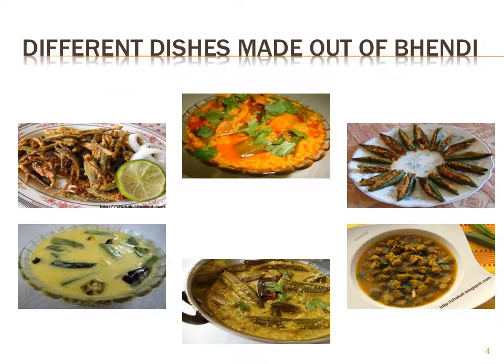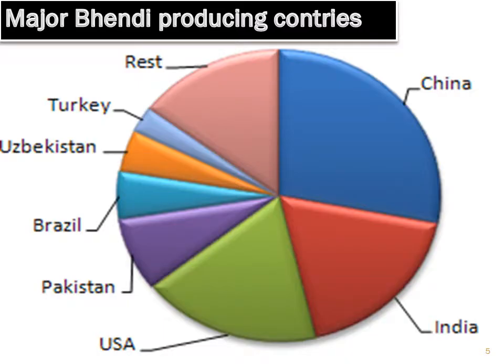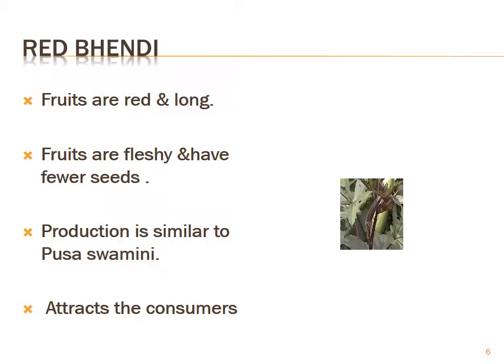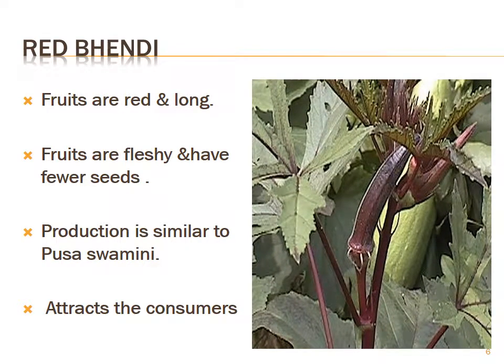There are thousands to lakhs of dishes which are prepared from Binti. Binti fruits are red and long. Fruits are fleshy and have fewer seeds in the younger stage. In the maturity stage it will turn to green color, and afterwards for seed production it will turn to yellow color. Production is similar to Pusa Swamani. This is all about red Binti.